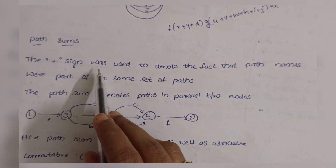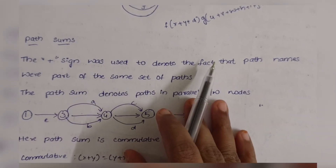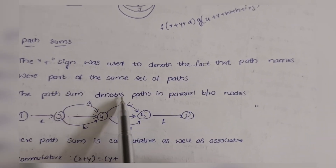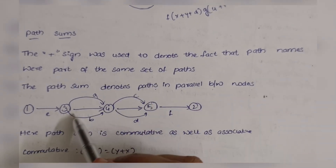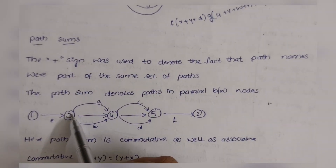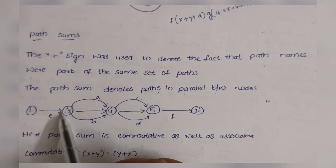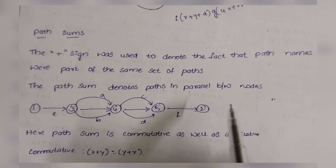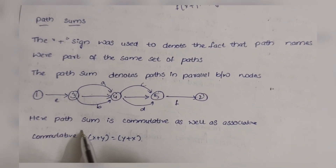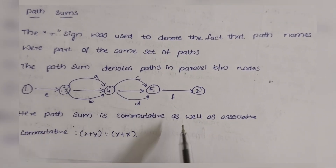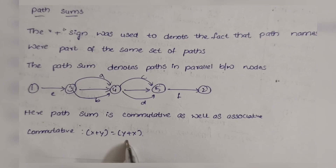The plus sign is used to denote that paths are in parallel between the nodes. Whatever the parallel nodes are, we add them — the path sum denotes paths in parallel. The path sum is both commutative and associative: X + Y = Y + X.